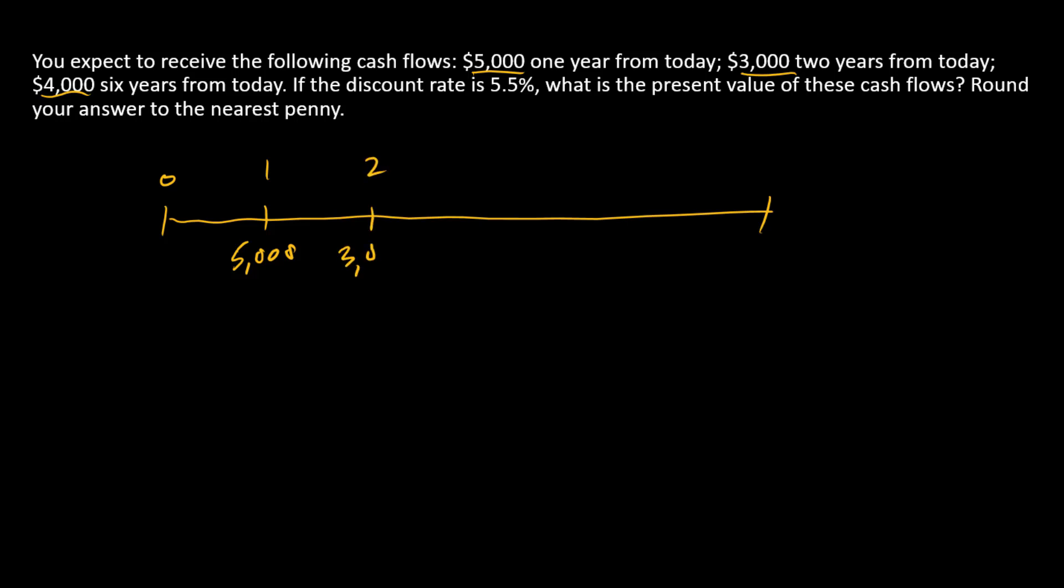The second cash flow of $3,000 occurs two years from today, and the third cash flow of $4,000 occurs six years from today.